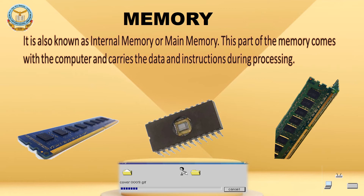Memory is also known as internal memory or main memory. When you use a program, the computer loads it from the hard disk to the much faster memory that we call RAM — random access memory. When you save your work, quit, or close the program, the data gets returned back to the hard disk. This part of memory carries data and instructions during processing; it is active only when the computer is working, and when you shut down the computer, all the data is deleted from it. That is why we call it temporary or volatile memory.